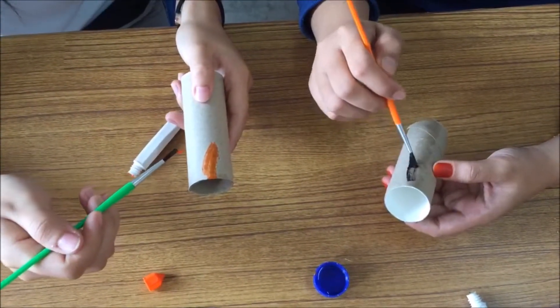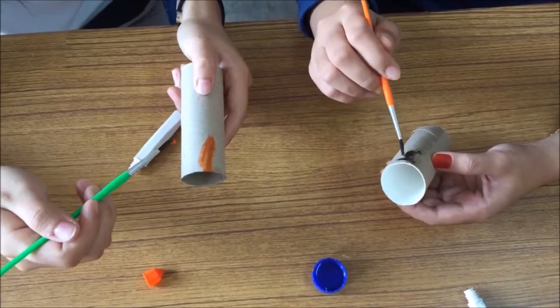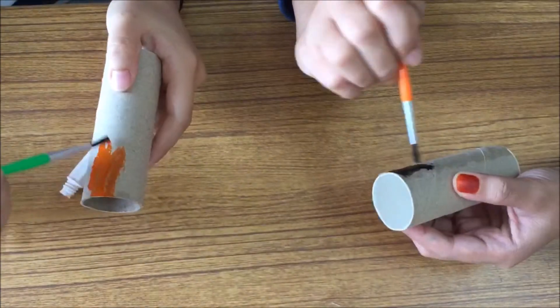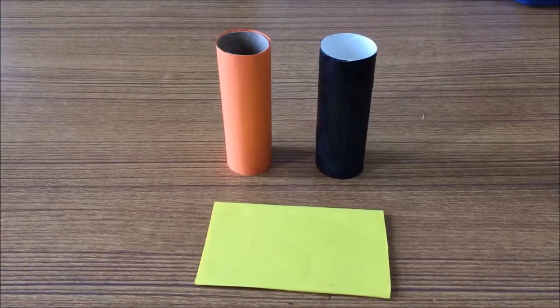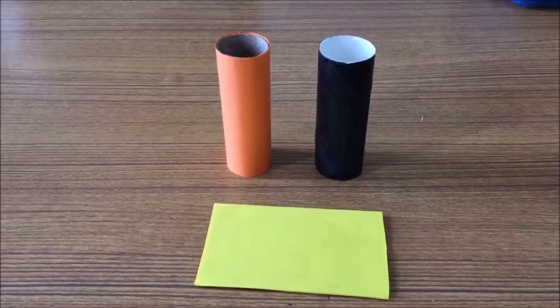So we are now going to color the toilet paper roll into the color that we need. So we already done coloring the cardboard and also the toilet paper roll and we just let it dry first.